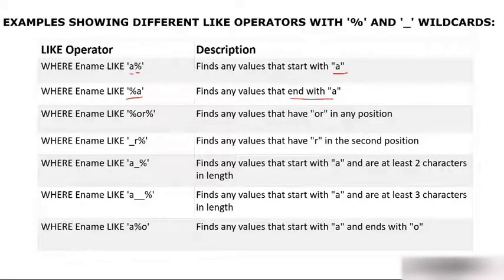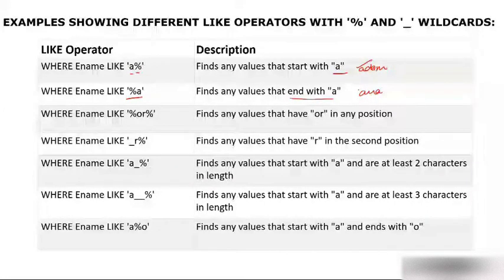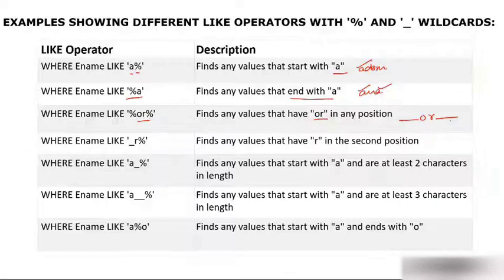For example, 'Adam' is a name starting with 'a', and 'Anna' is a name satisfying both conditions — starting with 'a' and ending with 'a'. The pattern '%or%' finds any value that has 'or' in any position — the left and right sides can have any value.